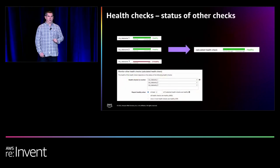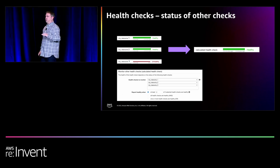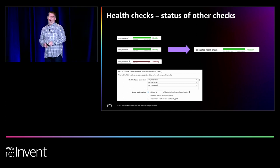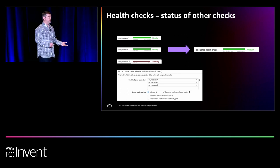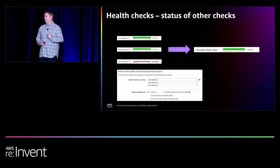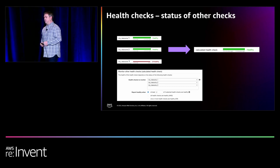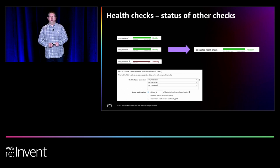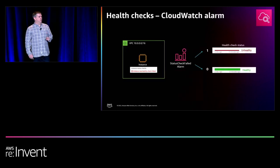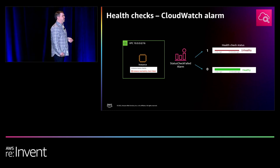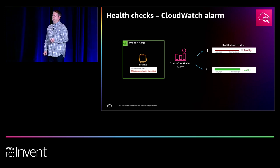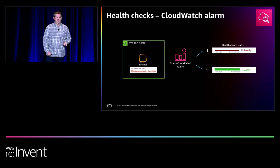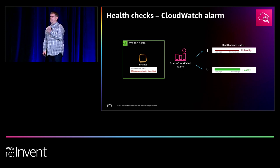We can also check the status of other health checks. Based on three health checks — say three key EC2 instances — if two out of three are available, we'll respond with a positive answer. If it went down to a single one, we'd return a different address, maybe a static website. We can also look at CloudWatch alarms — if an EC2 instance isn't reachable over the public internet or has a security group denying access, we can check the CloudWatch alarm status and return a different DNS result based on that status without needing to reach the instance itself.